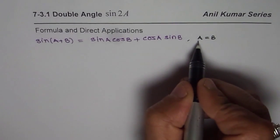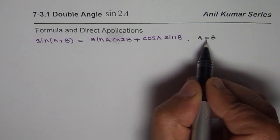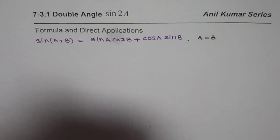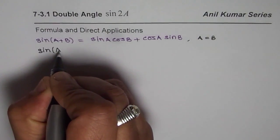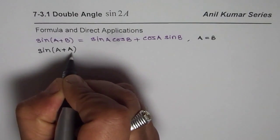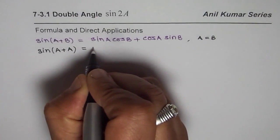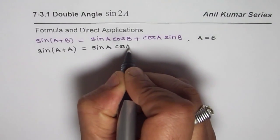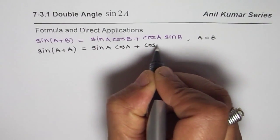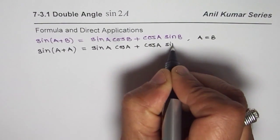So let me substitute A equals to B or write A instead of B. Then what we have here will be sine of A plus A. So instead of B, I am writing A and then this formula can be written as sine of A cos of A plus cos of A sine of A.